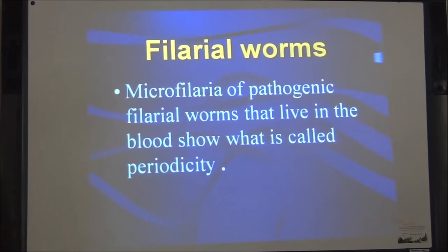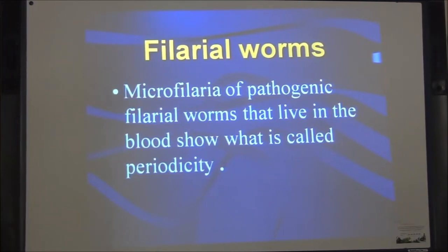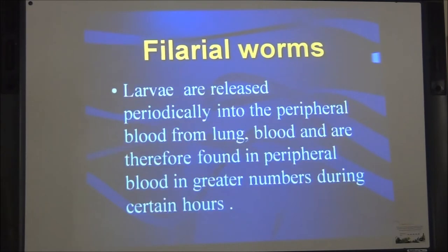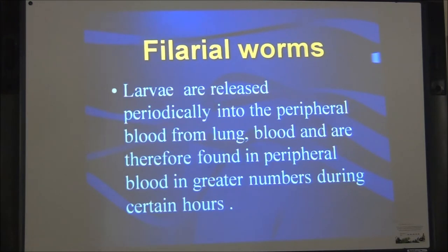The microfilaria of pathogenic filarial worms that live in the blood show periodicity. In periodicity, the larvae are released periodically into the peripheral blood and are therefore found in the peripheral blood in greater numbers during certain hours. That is why it is known as periodicity.